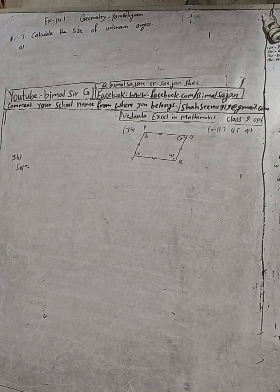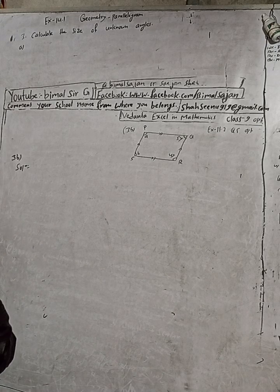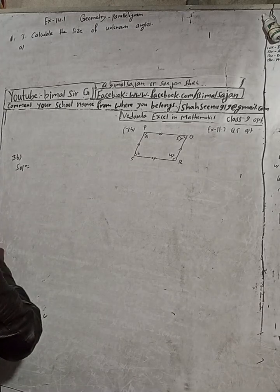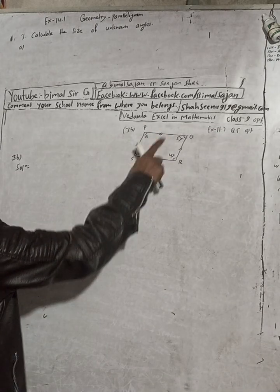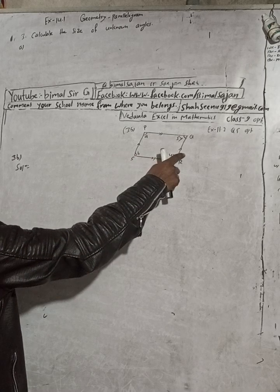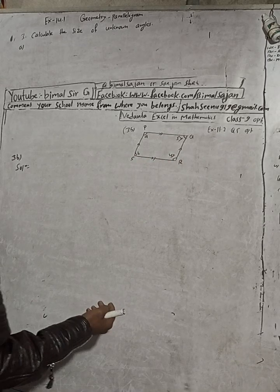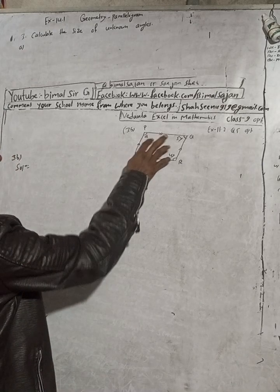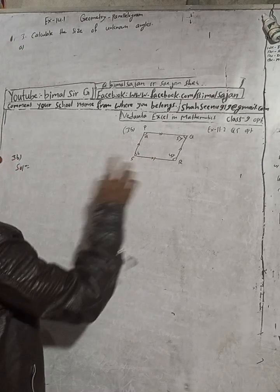Let's start the solution. Here you can see this is a parallelogram — this side is parallel to this, and this side is parallel to this. When opposite sides are parallel, that is called a parallelogram. Now to find angle A, what we can do is choose the right pair of angles.